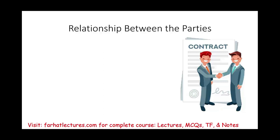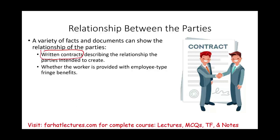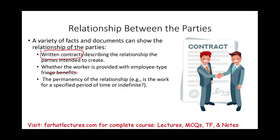The relationship between the parties is a third common law factor. A written contract describing the relationship is a good starting point, but you also have to see how the parties are actually acting. Whether the worker is provided with employee-type fringe benefits matters — non-employees should not qualify for those. Also, is the relationship permanent or indefinite? Working for a company on a permanent basis suggests employment, while working on a project basis suggests independent contractor status.